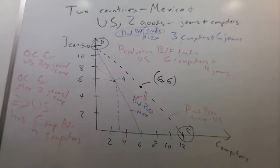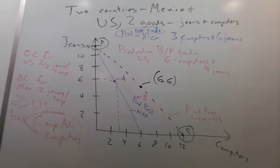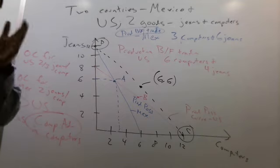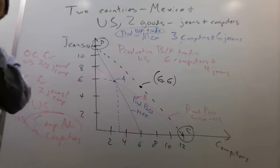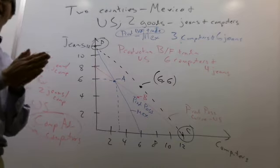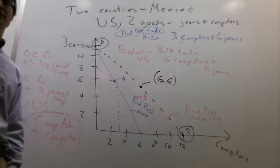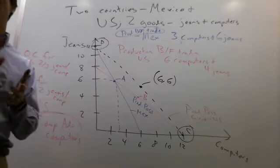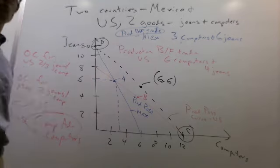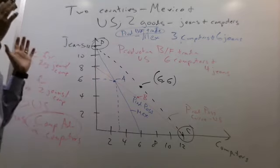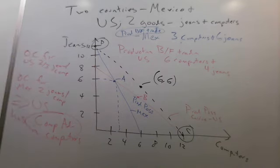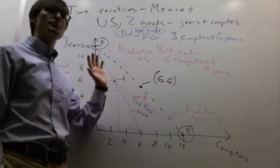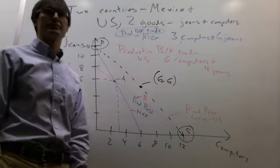Comparative advantage is one of the most misunderstood concepts in economics. The way to think about it: it's not what you're good at. You don't have to be good at anything. You can be bad at everything. It's what you're least bad at. Whatever you're least bad at, you have comparative advantage in that. Any country — Burundi, Suriname, El Salvador right after a civil war — every country could produce something, and they should focus on what they're least bad at. And if countries do that, they can all consume beyond their production possibilities.